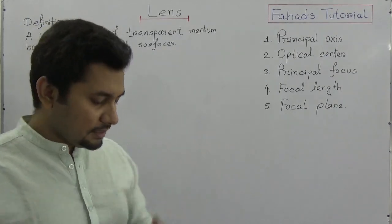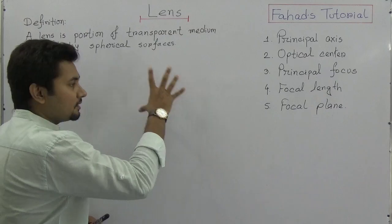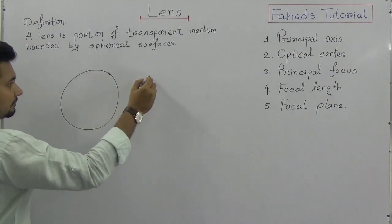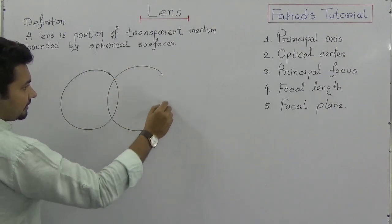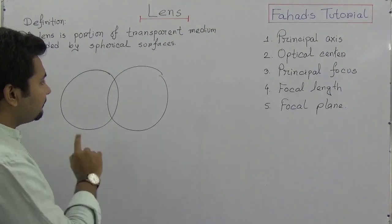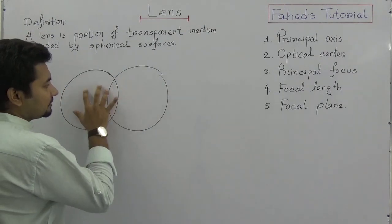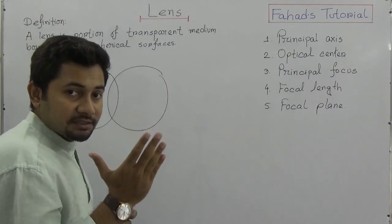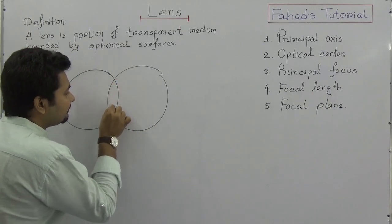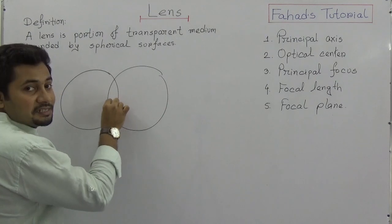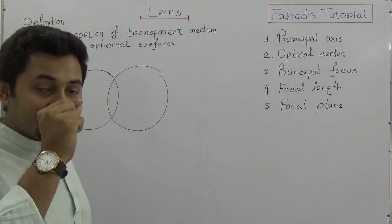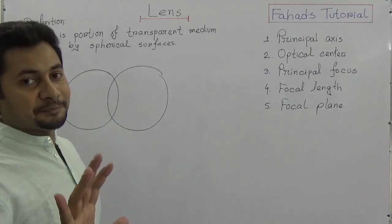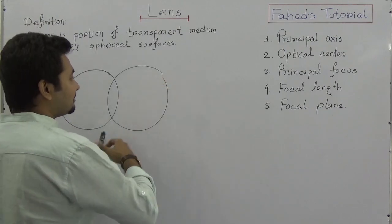We can say that a lens is a part of two spheres. I am drawing it by hand so it might not be perfectly spherical. If these two spheres join together, the portion created by the combination of two different spheres — if it acts as a transparent medium — then ray refractions will happen here, and this portion is known as the lens.